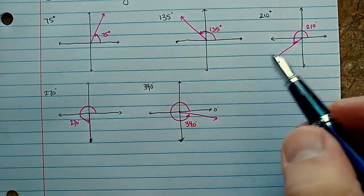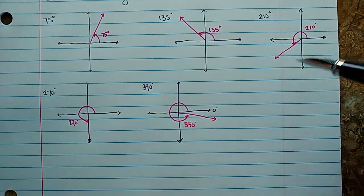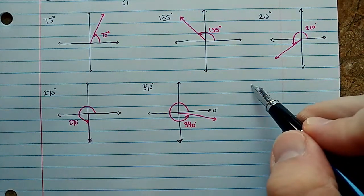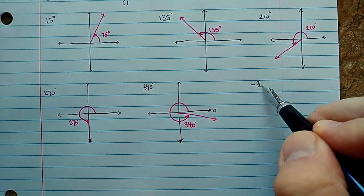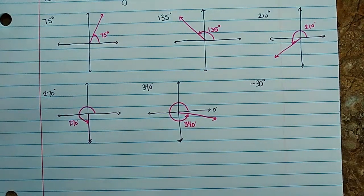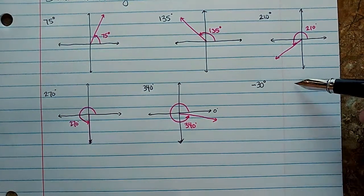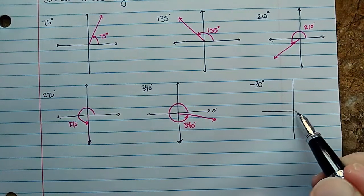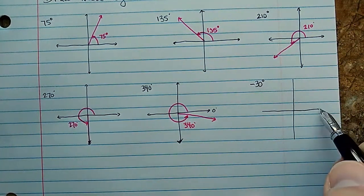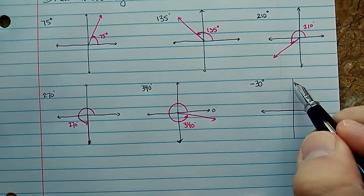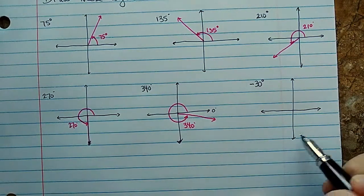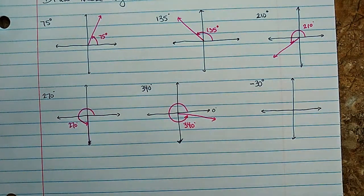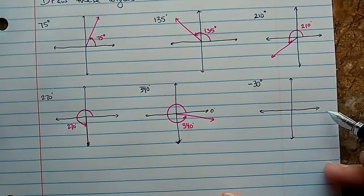Okay, we're going to do a couple more. Let's start with this one, negative 30 degrees. Now I had mentioned earlier that when you draw these, we rotate counterclockwise, the way we've been doing so far. But when you have a negative angle, like negative 30.